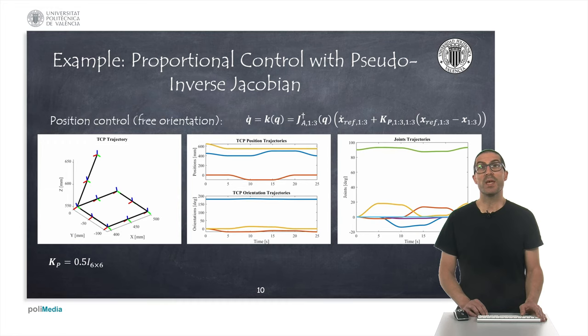Here, we can see the case in which we only perform the position control, the orientation of the end effector is totally free. As it can be seen, now the orientation of the tool is totally different from the previous case, even though the end effector trajectory describes the same solution.